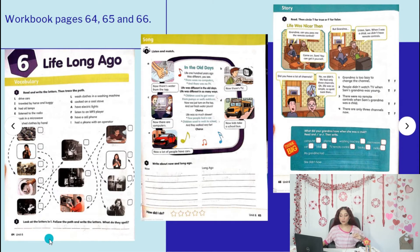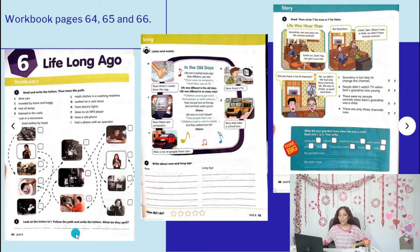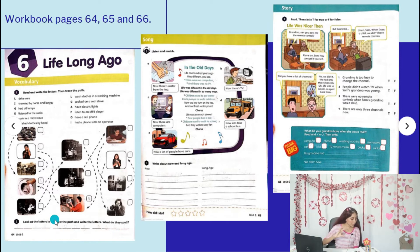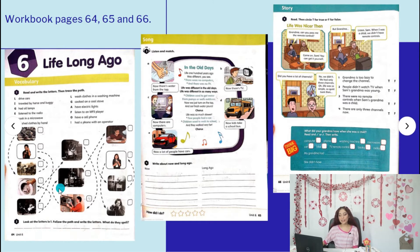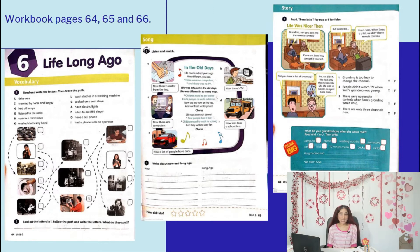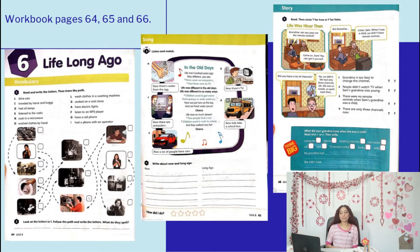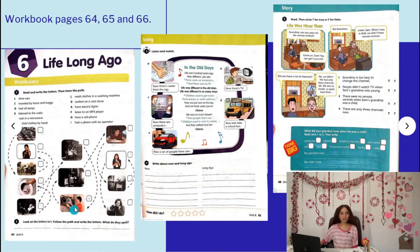We're going to follow the dotted lines. When you finish writing the letters and following the path, do Activity 2, which says: 'Look at the letters from Activity 1 and write the letters — what do they spell?' You have the spaces and you write the letters from the previous activity to find out a phrase — a secret message. We'll see how many of you find it out.